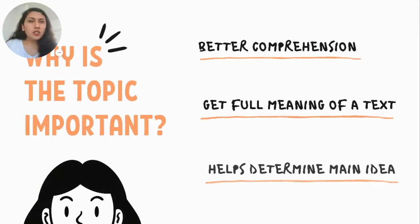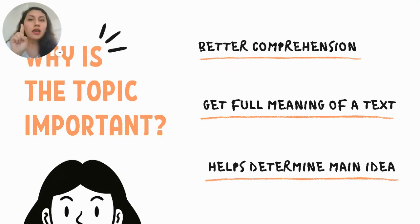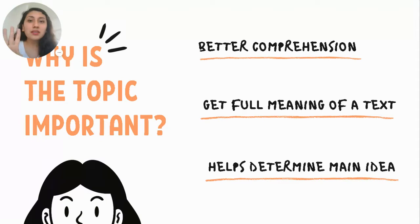Why is it important to know about the topic? There are three principal things. The first one: to have a better comprehension of a text. The second one: to get the full meaning of a text. And the third one: it helps us determine the main idea.